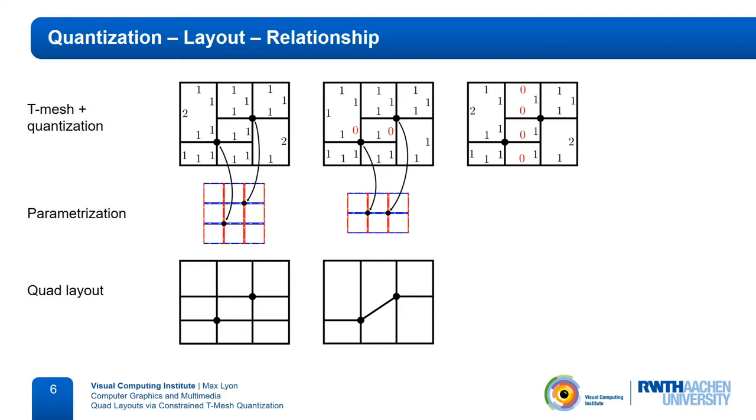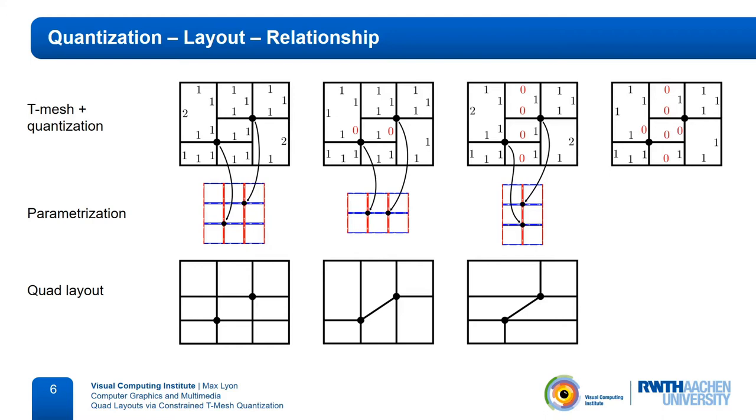Alternatively, we can assign zero lengths to these arcs. Then, the vertices will now lie on the same vertical line in the parameterization, resulting in a slightly different layout. Going even coarser by assigning zero lengths to the arcs in both directions is not possible, as this would force the two layout vertices onto the same position in the parameterization. This would cause inverted or degenerate elements and thus prevent the extraction of a valid quad mesh.